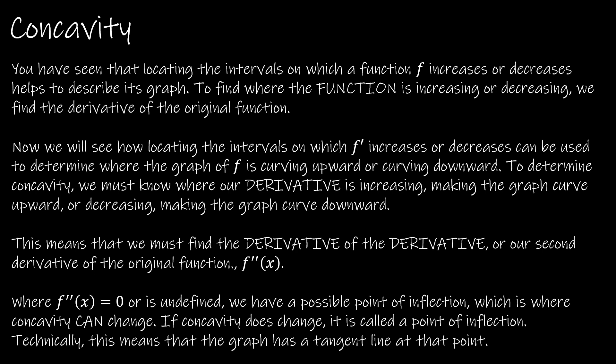To do that, we would have to find the derivative of the derivative, or the second derivative. So we're going to find the second derivative. What that does, in terms of our original function, is tell us if we have something curving upward or curving downward, which is called concavity — concave up and concave down.